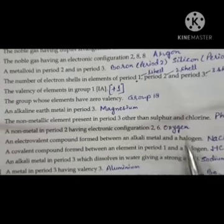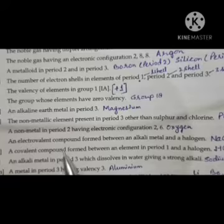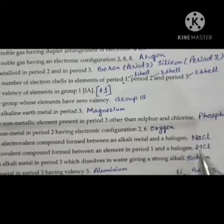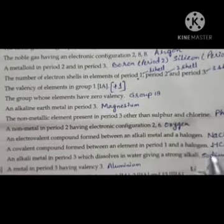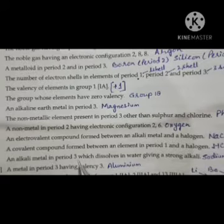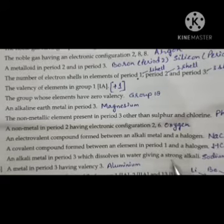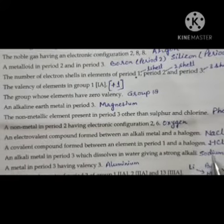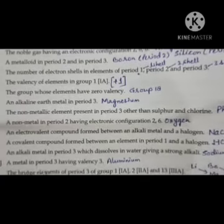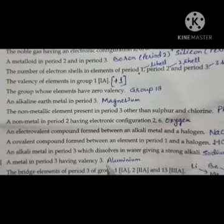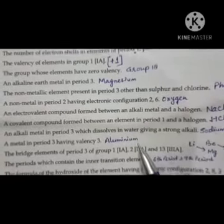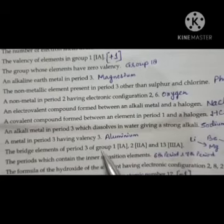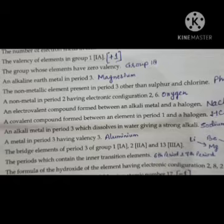A covalent compound formed between an element in period 1 and a halogen is hydrogen chloride, HCl. An alkali metal in period 3 which dissolves in water giving a strong alkali is sodium — it gives NaOH. A metal in period 3 having valency 3 is aluminum, atomic number 13, with electronic configuration 2,8,3.